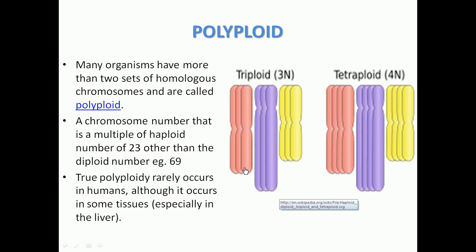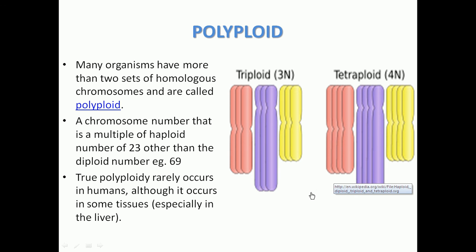Three sets is called triploid. If we have four instead of two, we call it tetraploid. If we have five, we call it pentaploid, and so on.